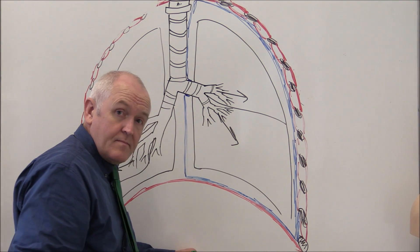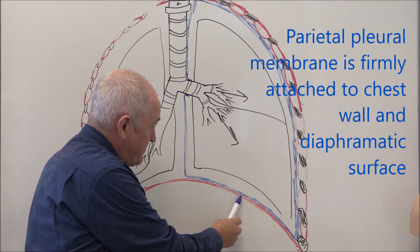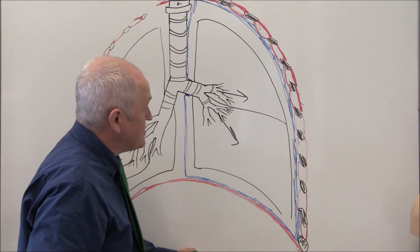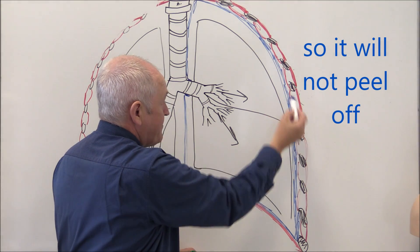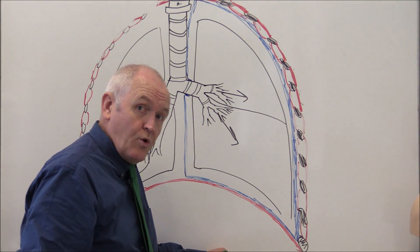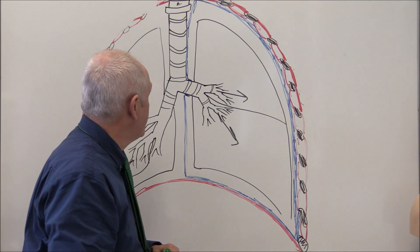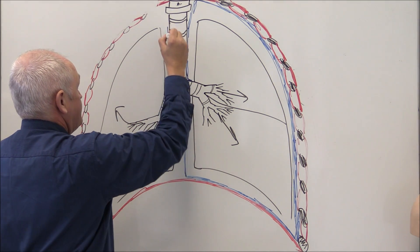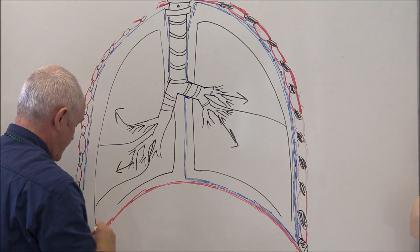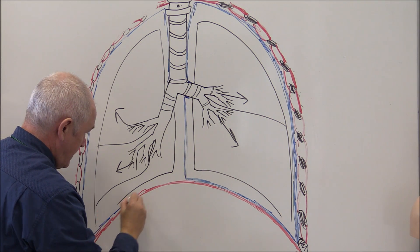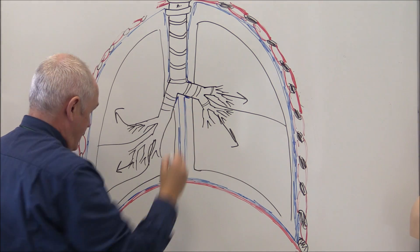The parietal pleural membrane is fixed — adherent to the superior surface of the diaphragm. The same membrane, as it goes around the inside of the thoracic cavity, is fixed to the tissues of the chest wall, and it's very hard to peel away anatomically. There is one on each lung because they're both in their own pleural membrane, with the parietal pleural membrane covering the superior surface of the diaphragm on each side.